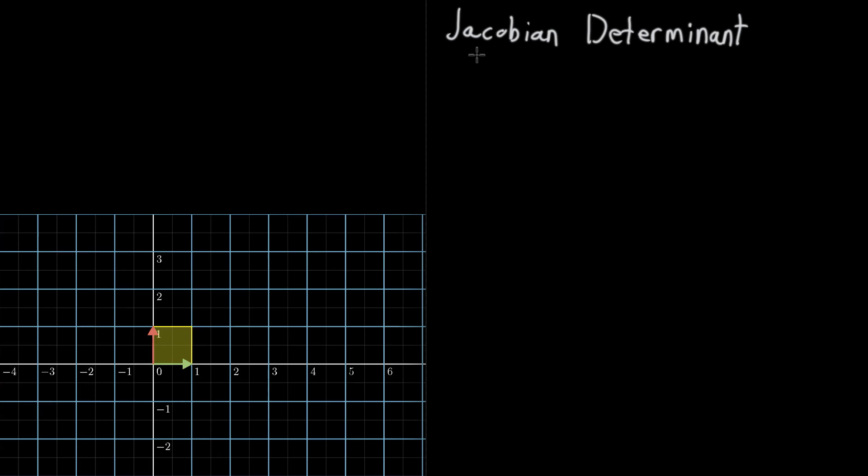In this video, I want to talk about something called the Jacobian determinant. It's more or less just what it sounds like—the determinant of the Jacobian matrix that I've been talking to you about in the last couple of videos.